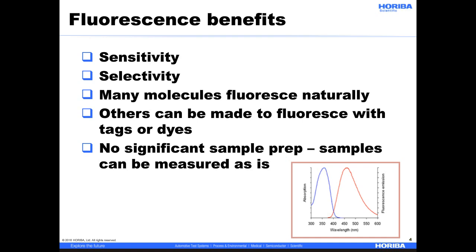Fluorescence makes it easy to see what you want to see without the guesswork. Also, many molecules are fluorescent naturally, so you don't have to change these samples in any way. For samples that are not naturally fluorescent, there is a whole range of tags or dyes that can be added for a specific application without significant sample prep. For the most part, samples can be measured as is, without having to prepare them in special pellets or media. Of course, we are not using fluorescence to identify molecules necessarily, as in the other techniques. Fluorescence spectra are broad, so in general, changes in a fluorescent spectrum are used to track changes in the sample of interest on a molecular level.